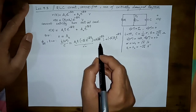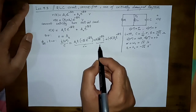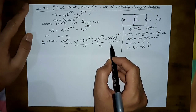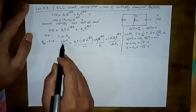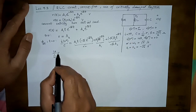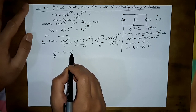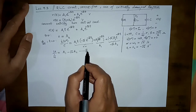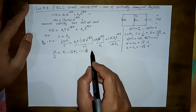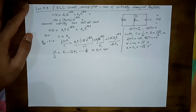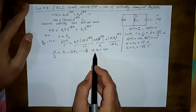Putting t = 0: the first term goes to zero, the second term becomes A1, and the third term becomes -√6·A2. So we get: (i(0+)/C) = 10/1 over 42 = A1 - √6·A2. Since A2 = 0, solving this equation gives A1 = 420.